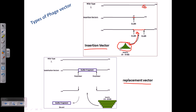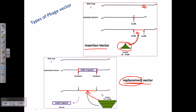Another type is called the replacement vector, where we have a different genomic segment present that is not required inside the phage vector or its lytic cycle. What we do is substitute this particular gene segment with our gene of interest — that's why we call it a replacement vector. The existing segment is called the stuffer fragment or stuffer sequence. We discard the stuffer sequence by cleaving it out, and in its place we add our gene of interest. So we are replacing the stuffer with our gene — that's why it is called the replacement vector.